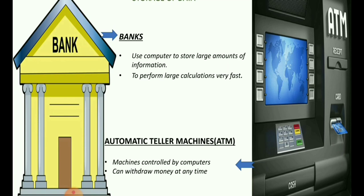Did you see a machine here? I think most of you are familiar with this machine. What is that? ATM. Very good. What is the full form of that machine? Automatic tele-machine. This machine is completely controlled by our computer, and we can withdraw money at any time using this machine. So mainly in banks, we use computers for the storage of data.